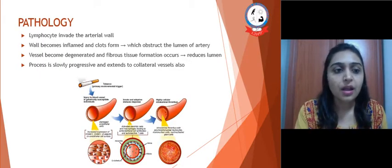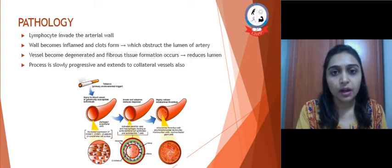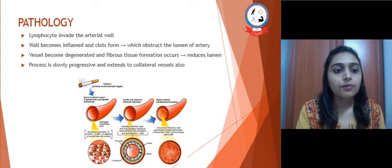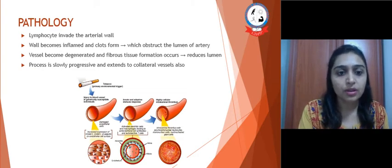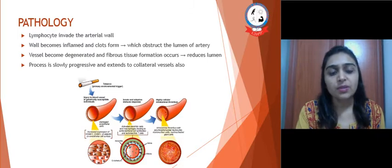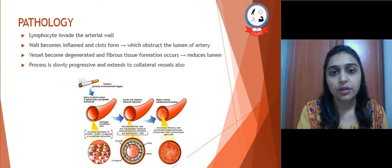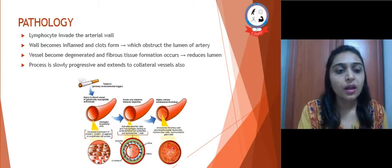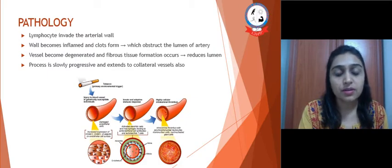Pathology: Lymphocytes may invade the arterial wall. The wall becomes inflamed and clot formation occurs, which obstructs the lumen of the artery. Vessels become degenerated and fibrous tissue formation may occur, which again reduces the lumen. This process is very slowly progressive and extends to collateral vessels also.